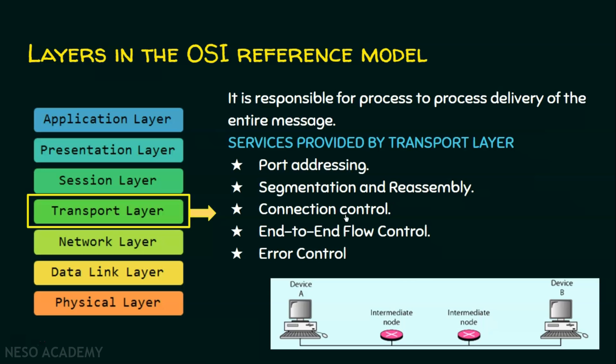The third service is connection control — whether the communication between two devices will be connection-oriented or connectionless. Connection-oriented means a connection is established before sending data. Connectionless means data is sent without establishing a connection first. Our network supports both connection-oriented and connectionless services. So connection control is one of the services provided by the transport layer.